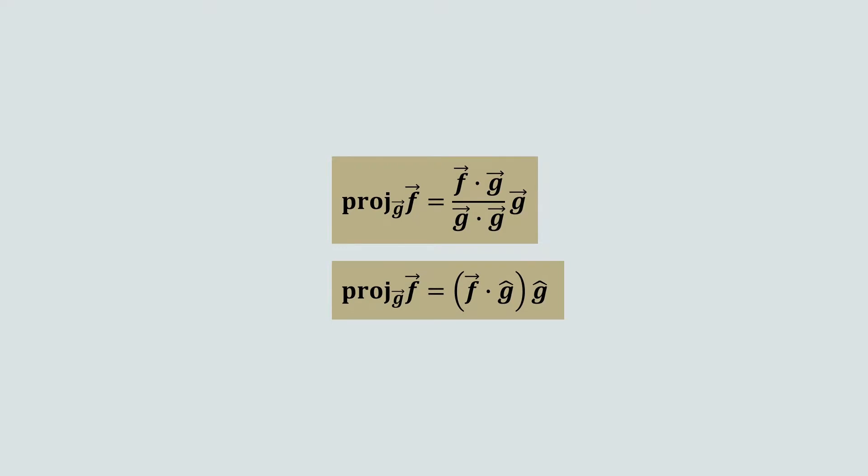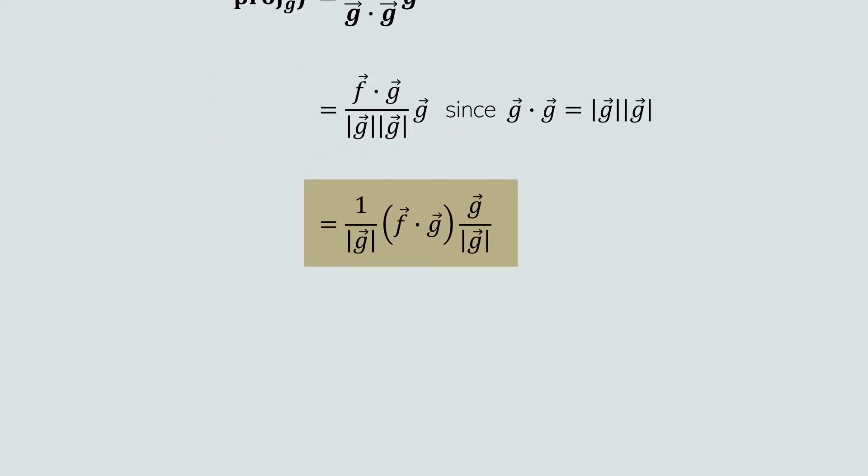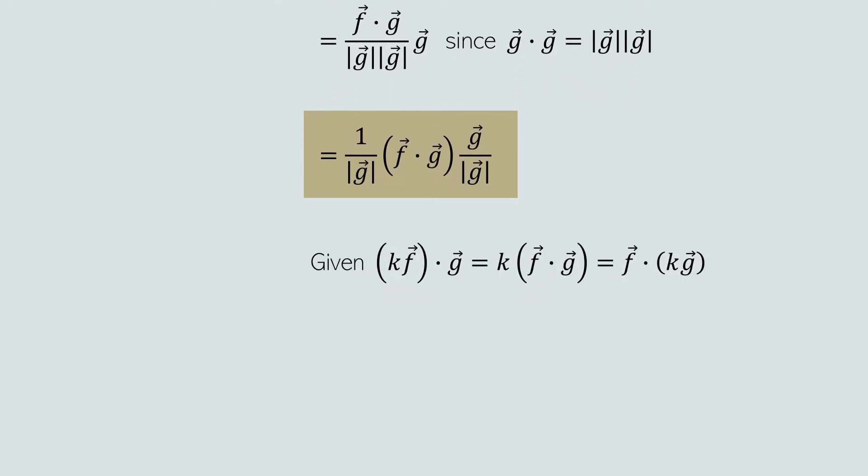An equivalent formula is f dot g-hat times g-hat, and this equivalent form can be derived from the first formula. We explained that g dot g is equivalent to magnitude of g times magnitude of g. We can slightly rewrite the equation to make the maths easier in the next steps. Before continuing, we need to understand a special property of the dot product, which states that if k is a scalar multiple, then k times vector f dot vector g is equivalent to k times the dot product of vectors f and g. This is also equivalent to vector f dot k times vector g. In simpler terms, factors of individual vectors in a dot product expression can be taken out and placed at the front, and the reverse is also true.